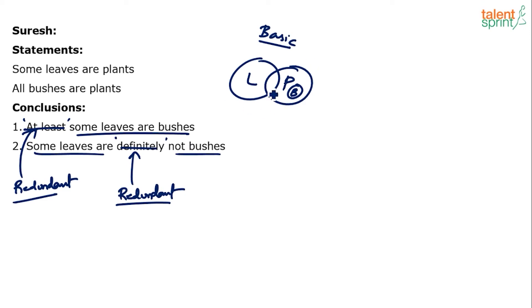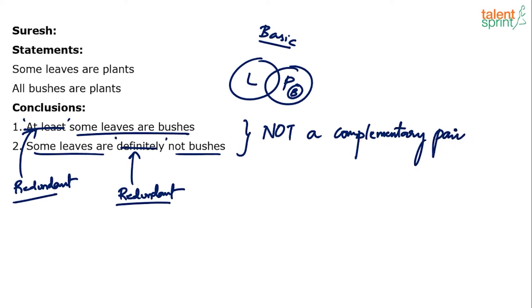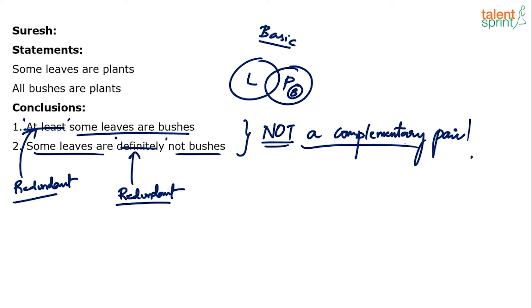Conclusion 2 is 'some leaves are definitely not bushes' — the word 'definitely' is also redundant, since conclusions are in definite form unless specified otherwise. So the two conclusions are simply: some leaves are bushes, and some leaves are not bushes. Importantly, this is NOT a complementary pair — don't answer 'either or.' The complementary pair for 'some leaves are bushes' would be 'no leaves are bushes'. Now checking conclusion 1 from the basic diagram — it fails immediately, since leaves and bushes do not touch at all.